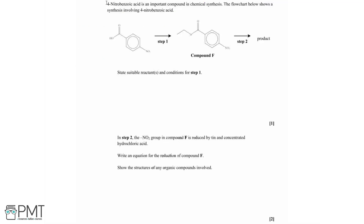4-Nitrobenzoic acid is an important compound in chemical synthesis. The flowchart shows a synthesis involving 4-nitrobenzoic acid: a first step leads to compound F, and a second step leads to a final product. For the first part, we need to state suitable reactants and conditions for step 1.